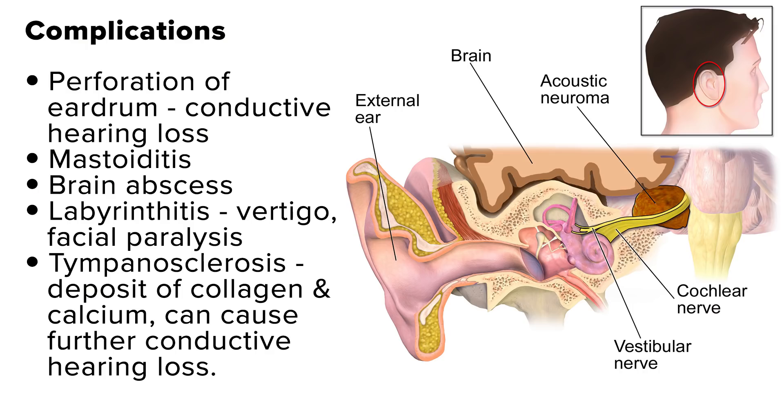Complications are uncommon, but the primary complication is perforation of the eardrum and conductive hearing loss. The hearing loss usually resolves with treatment but may be permanent if chronic disease is present. Acute perforations usually heal spontaneously without problems, but complex situations may require surgical closure of the perforation. In rare cases, bacterial middle ear infection can spread locally, resulting in mastoiditis, which involves the cells of the skull behind the ear.